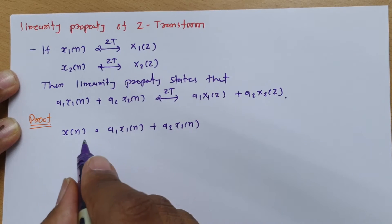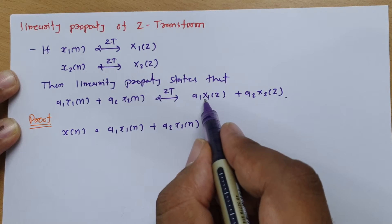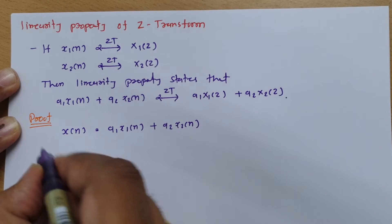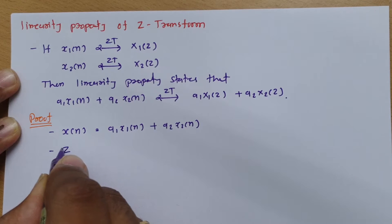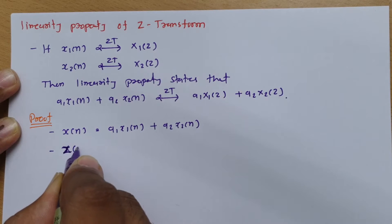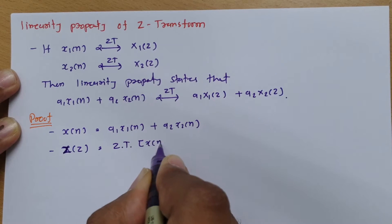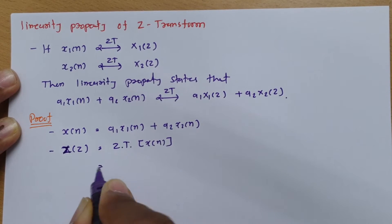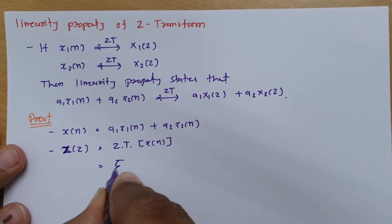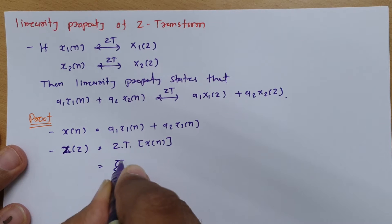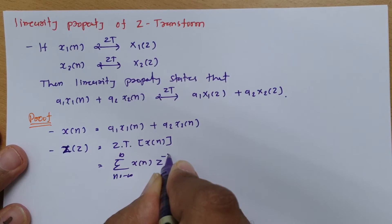Now if I want to calculate the Z-transform of x(n), that Z-transform is X(z). Using the basic formula of the Z-transform, X(z) equals the summation from n = −∞ to +∞ of x(n)·z^(−n).